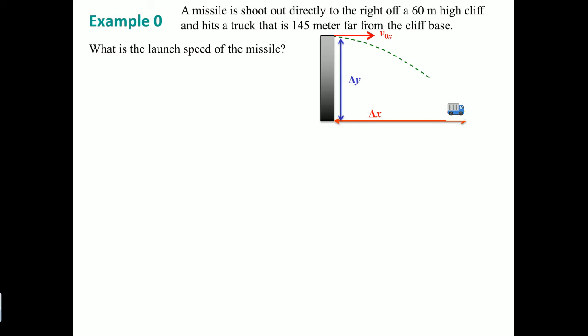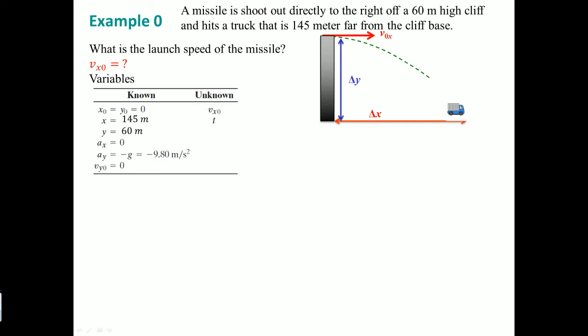Let's go over the solution. First, we want to identify the unknown — the question mark is vx₀, the initial velocity in the x-direction. The reason is that the launch is directly to the right, so it's vx₀. Next, we list our variables. We know x₀ and y₀ equal zero because it starts at the origin, and Delta X is 145 meters — the distance the truck is from the cliff.